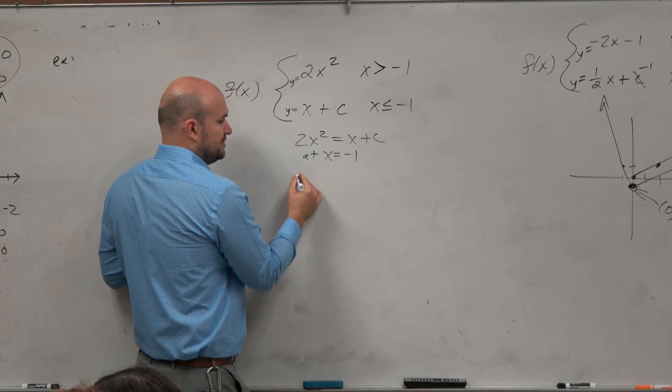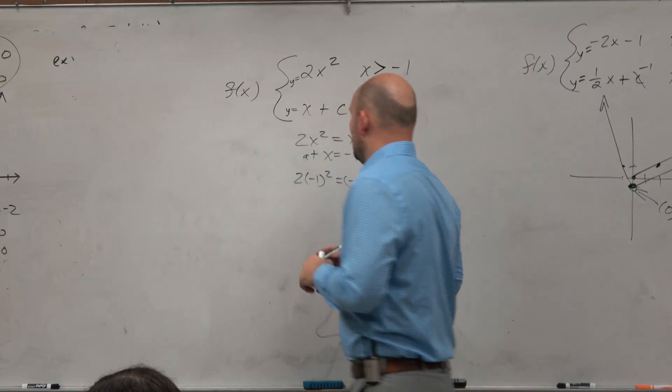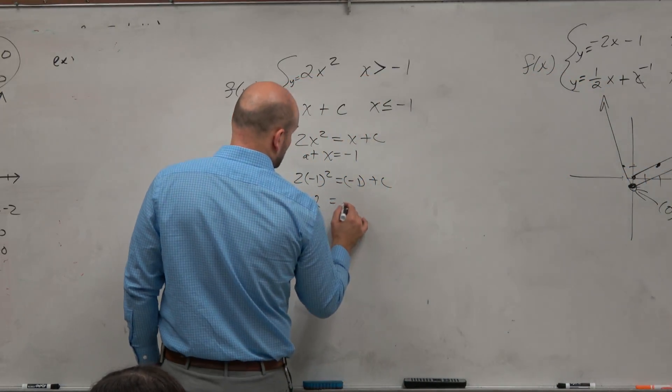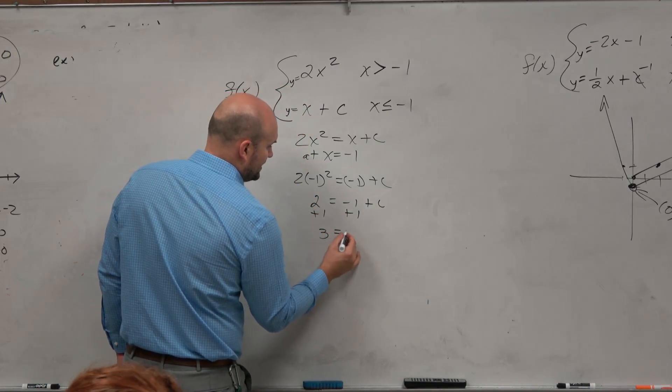So all I need to do then is just replace there. Negative 1 squared is going to be 1, so that's going to be times 2, equals negative 1 plus c, plus 1 plus 1, 3 equals c.